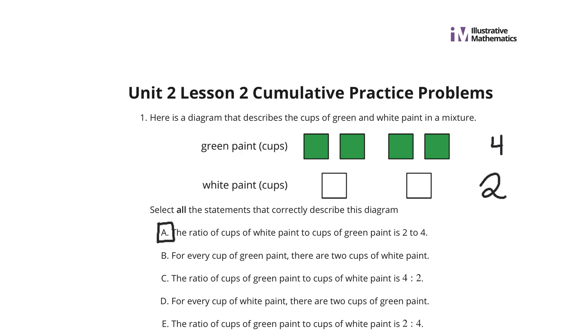B, for every cup of green paint, there are 2 cups of white paint. Well, that would require us to divide by 4 here to get 1 cup of green. If we divided by 4 from the 2, it would be 2 over 4, or 1 half. So, for every cup of green paint, there's actually half a cup of white paint, so B is not a solution.